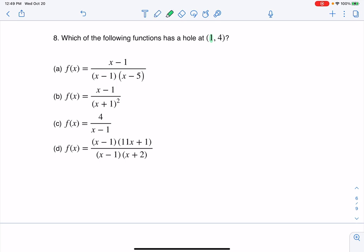So just taking a look here, I can see A does have a hole because it has x minus 1 common to the numerator and denominator, but B doesn't. I don't have that. Like this is x minus 1, this is x plus 1, those are different. So B is not my answer.